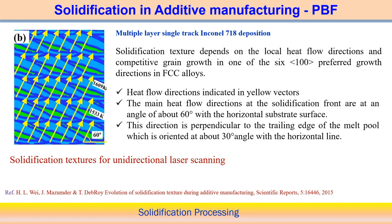The solidification structure depends on the local heat flow direction. Competitive grain growth usually occurs along one of the six preferred growth directions in FCC. The preferred growth direction for FCC alloys — as discussed also for fusion welding — is the ⟨100⟩ direction.